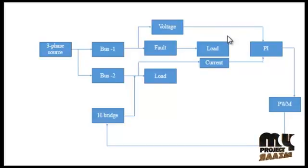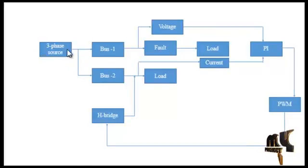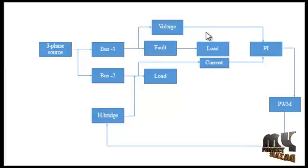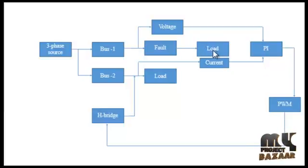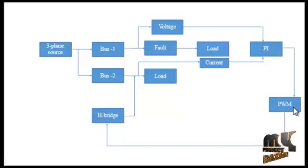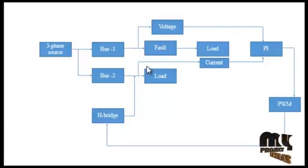In this block diagram, we have three phase loads on bus one and bus two, with three phase reference supply from the grid. On bus one, a fault will be added and then we measure the voltage, which is fed to the PI controller. We also measure the load current and give it to the PI controller. The PI controller controls the pulse width modulation based on the output voltage of bus one and the output current of bus two.